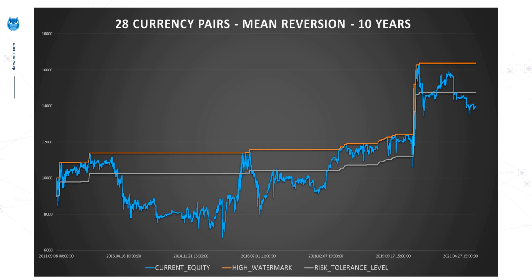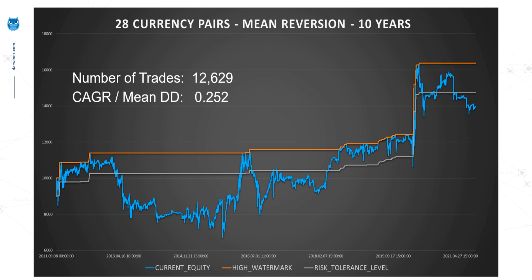If I had to estimate based on this chart, the maximum drawdown is actually somewhere between 35 and 40%. In terms of statistical significance, the number of trades generated from this mean reversion strategy is somewhere between 12 and 13,000 trades, so I'm fairly comfortable with this level of sample size. One of my favoured performance metrics is compound annual growth rate (CAGR) over the mean drawdown — any positive value represents a profitable system, and negative values represent losing systems. It is at least positive, but only a relatively low value of 0.252.